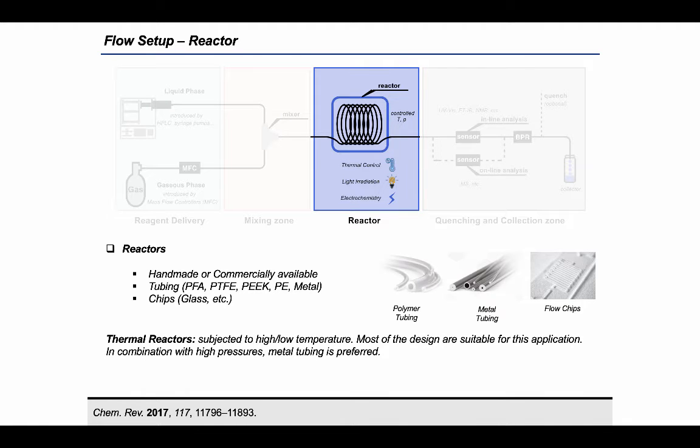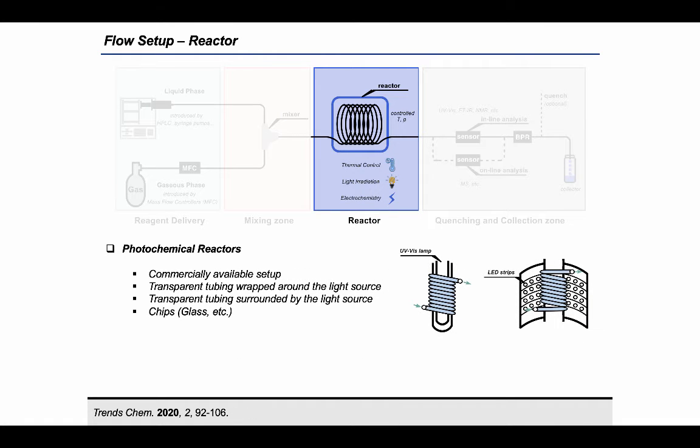However, when high temperatures and high pressure conditions are required, the adoption of metallic tubing is recommended for safety reasons. Photochemical reactors are usually made of transparent tubing which can be wrapped around the light source or surrounded by it.